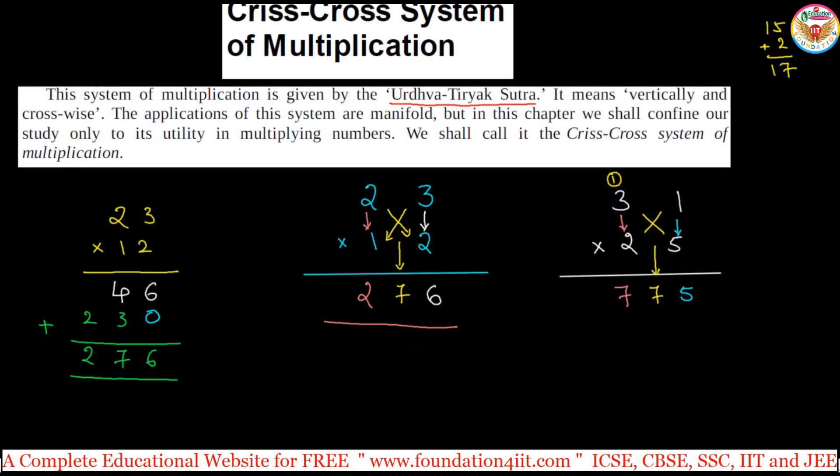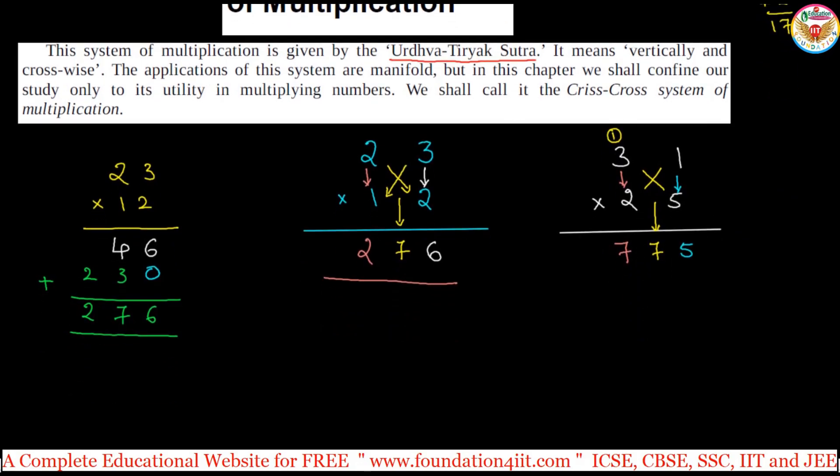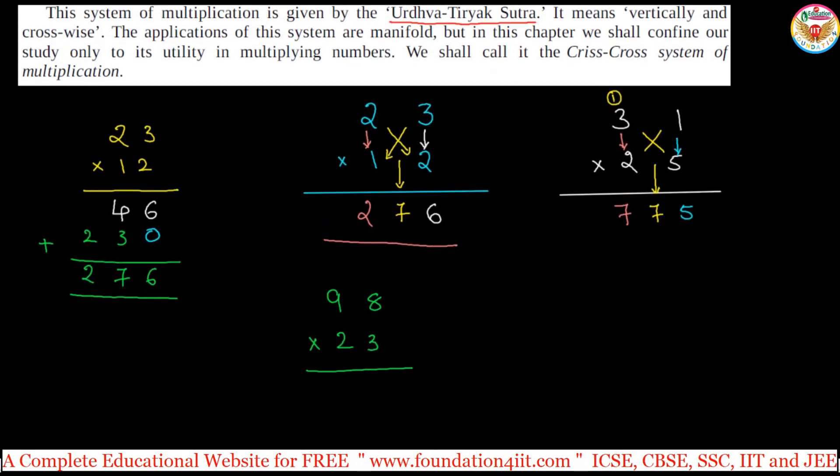Let us take, even if you take 98 times some 23. So, but calculation should we need to practice little bit. Single digit multiplication should have concept more, then you can do easily. So 8 times 3 is 24. No, 4 here, 2 is in mind. That is a carry over.